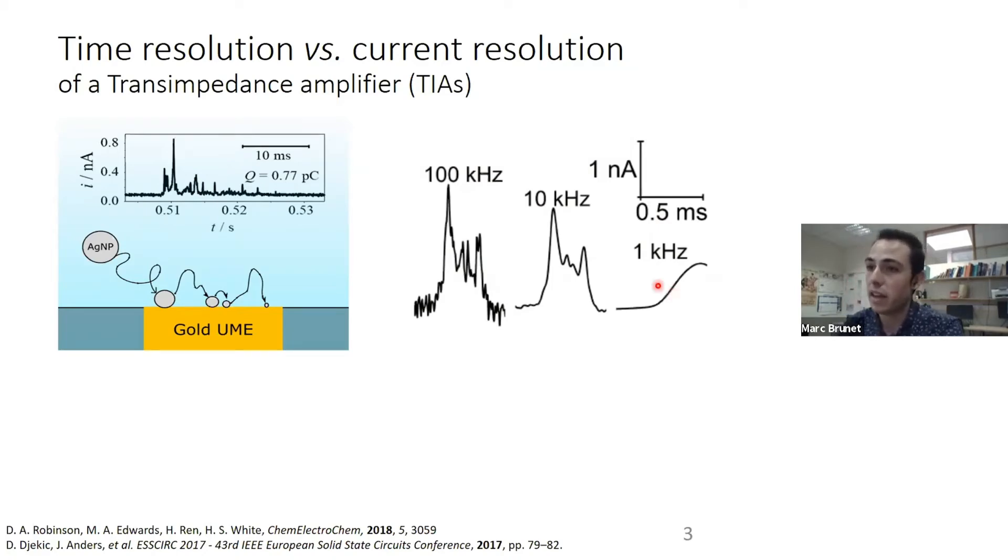Therefore, the only way to assess that the signal that is recorded is representative of the faradic process that has gone on the surface of the electrode is by using high bandwidth current amplifiers. According to the literature, this means from 100 kilohertz to above.